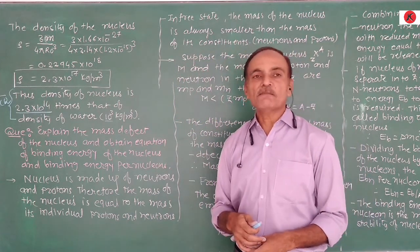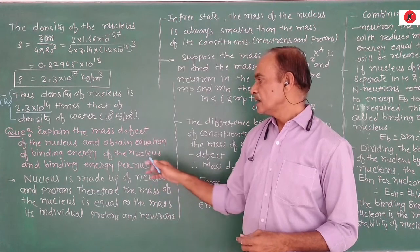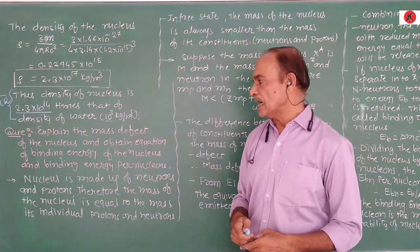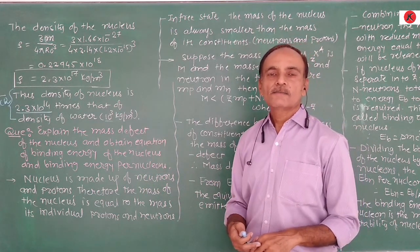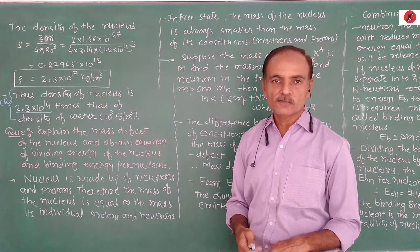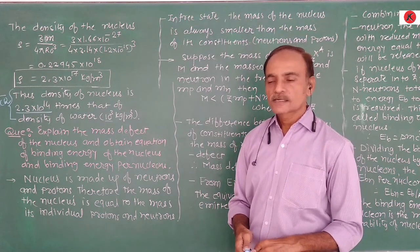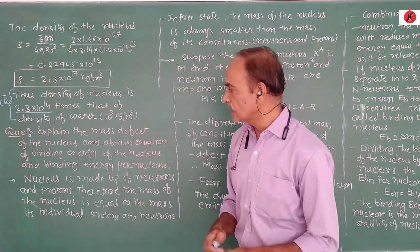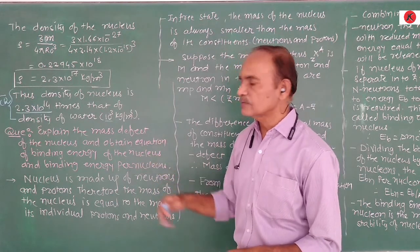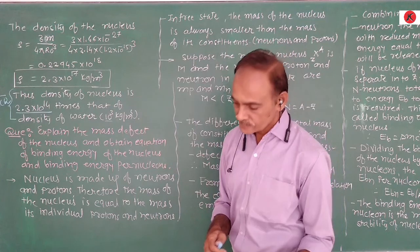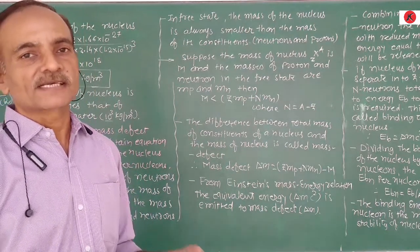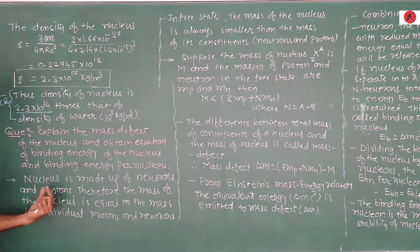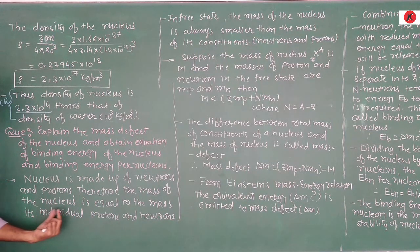Now let us explain the mass defect of the nucleus and obtain the binding energy and binding energy per nucleon — these are very important topics. Inside the nucleus, positively charged protons and chargeless neutrons are present. The nucleus is made up of neutrons and protons. Therefore, the mass of the nucleus should equal the sum of masses of its individual protons and neutrons.